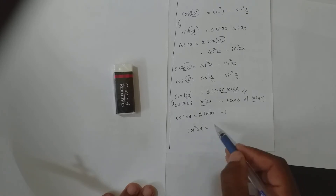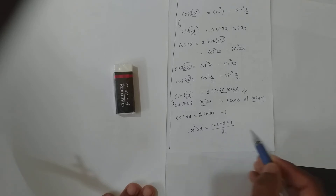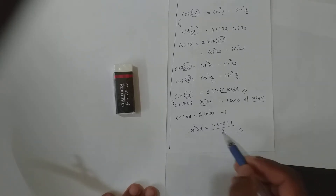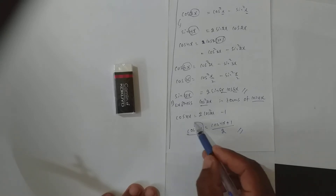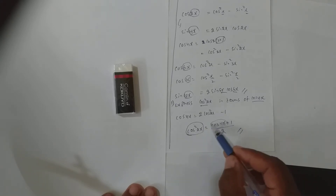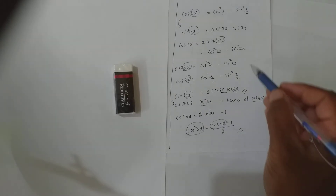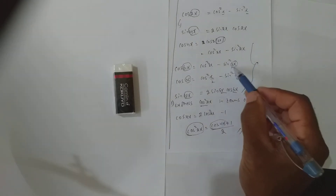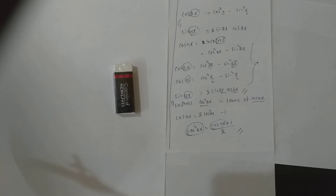So, cos²2x equals — first I will send 1 to the other side — cos 4x plus 1, all divided by 2. So my sum is done. I got cos²2x in terms of cos 4x. This was the sum based on the rule: angles on the right hand side will be half of the angles on the left hand side.